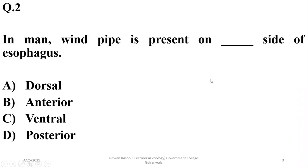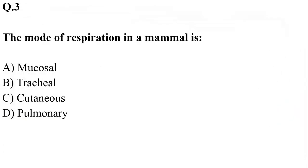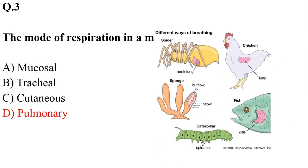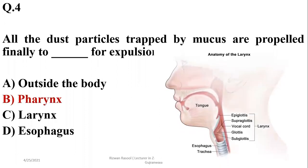In men, the windpipe is present on the ventral side of the esophagus. The mode of respiration in mammals is pulmonary. Dust particles trapped by mucus are propelled finally towards the pharynx for removal or expulsion, so the correct option is pharynx — trapped particles move towards the pharynx.